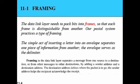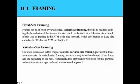Framing in the data link layer separates a message from one source to a destination from other messages. When the data link layer receives information in the form of packets, it creates frames from those packets. The frame is the PDU of the data link layer. Framing can be of two types: fixed size framing and variable size framing.